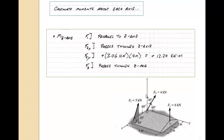About the Z axis: F1 is parallel to the Z axis, so it produces no moment. F2X passes through the Z axis. F2Y, going in its direction with a moment arm of 4 meters, produces counterclockwise rotation around the Z axis, so it is positive: 3.06 kilonewtons × 4 meters = +12.24 kilonewton-meters. F3 passes through the origin, so it also passes through the Z axis.